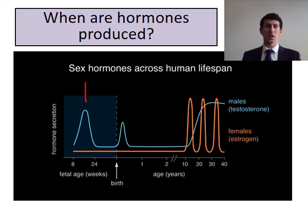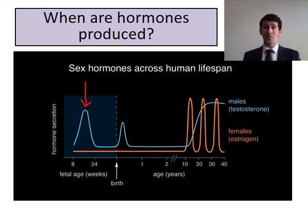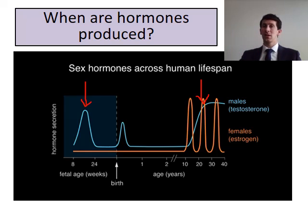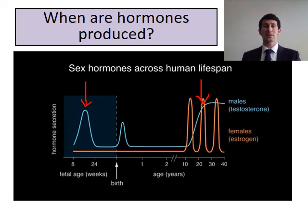A graph shows when hormones are released. The blue line indicates testosterone — you can see a peak prenatally, when the fetus is in the womb, which affects genital production and brain development. There is also a peak during adolescence and puberty, where rising testosterone levels go on to affect things like body hair, growth, and deepening of the voice in males. So testosterone is mainly produced during those two periods: prenatally and during adolescence.